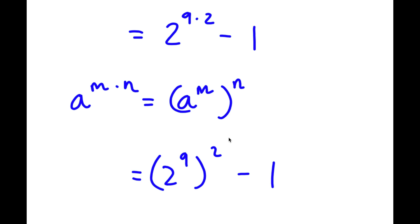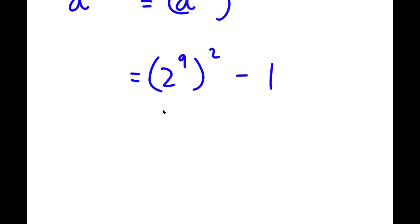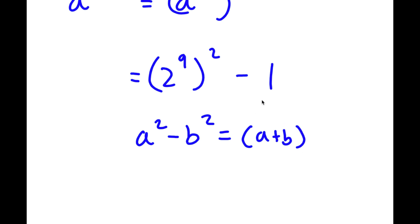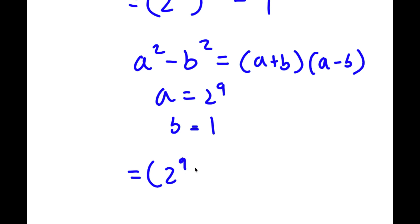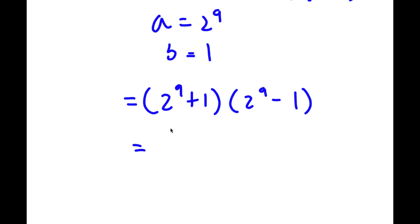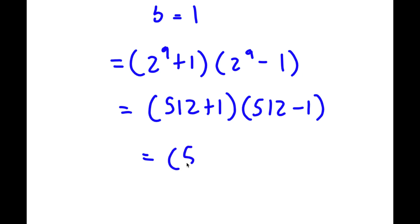Now I have 2 to the power of 9 squared minus 1. If I have something in the form a squared minus b squared, this equals a plus b times a minus b. I can think of 1 as 1 squared. So now I have 2 to the power of 9 squared minus 1 squared, where a is 2 to the power of 9 and b is 1. This gives me 2 to the power of 9 plus 1 times 2 to the power of 9 minus 1. Since 2 to the power of 9 is 512, I have 513 times 511.